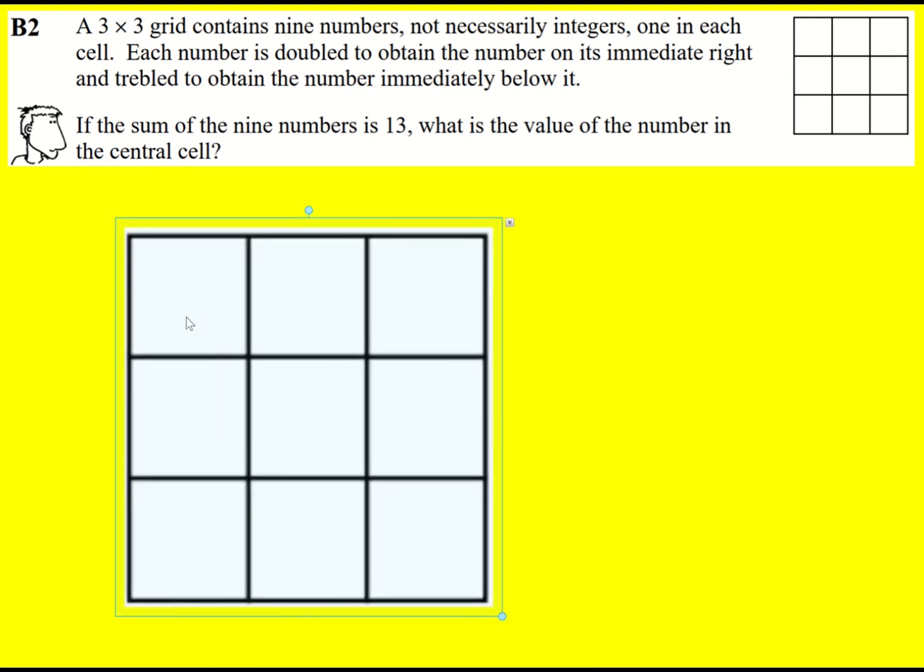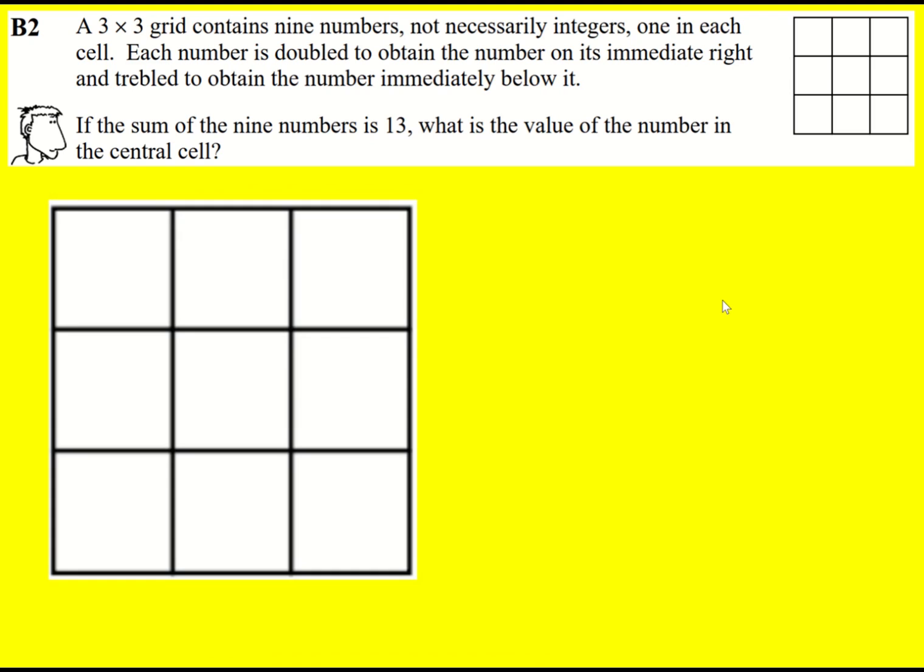We've got to fill this grid with nine numbers such that as we go to the right we double the number and as we go below we triple it. Then we're told the sum is 13. What is the value of the number in the central cell?